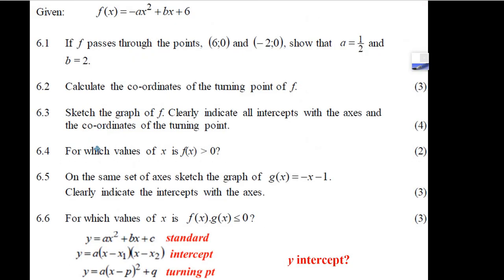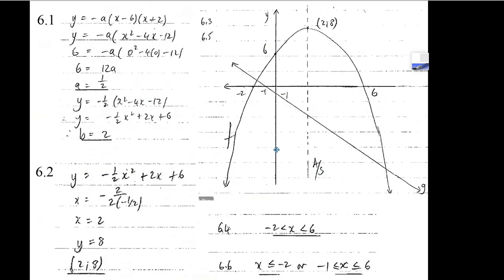One more question here. It says sketch the graph of f. We've got all this information now. We have the axis of symmetry, x equals 2. I like to put that in first, that dotted line. We know the turning point, the top, is 2 and 8.